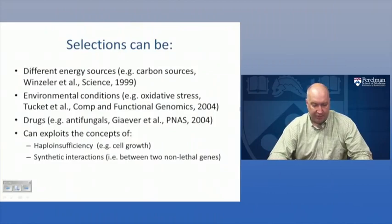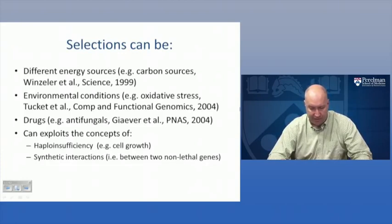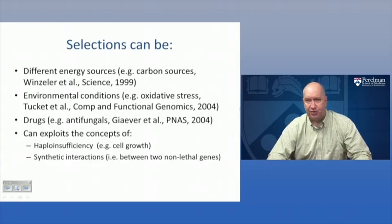The selections can be many different things - energy sources, for example changing the carbon source as in Winzler et al., Science 1999; changing environmental conditions, for example challenging the yeast with oxidative stress as in Tuckett et al., Comparative and Functional Genomics 2004; or using different drugs such as antifungals, as in a PNAS paper. The method takes advantage of several concepts, including haploinsufficiency - effects on cell growth when one of two copies is removed - and synthetic interactions between two nonlethal genes.